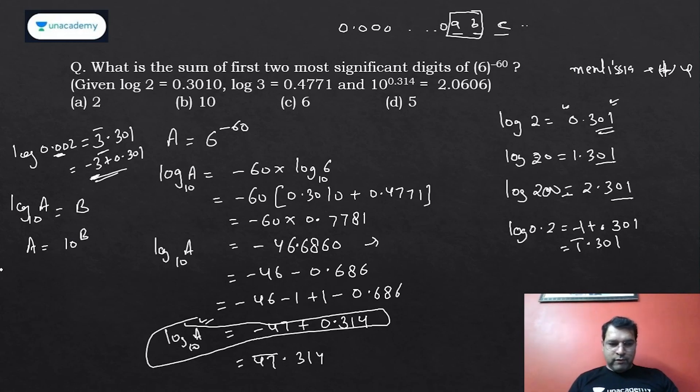So here A = 10^(-47 + 0.314). Whenever a^(x + y) is given, we can write this as a^x × a^y. So I can write this as 10^(-47) × 10^0.314.